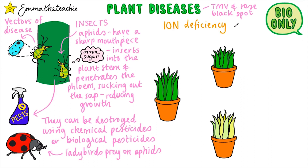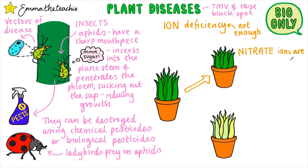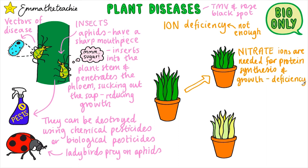Ion deficiency can also damage plants. This is when the soil doesn't have enough of certain ions, and there are two you need to know. Nitrate ions are needed for protein synthesis and therefore growth, so nitrate ion deficiency causes stunted growth — i.e., the plant is smaller.